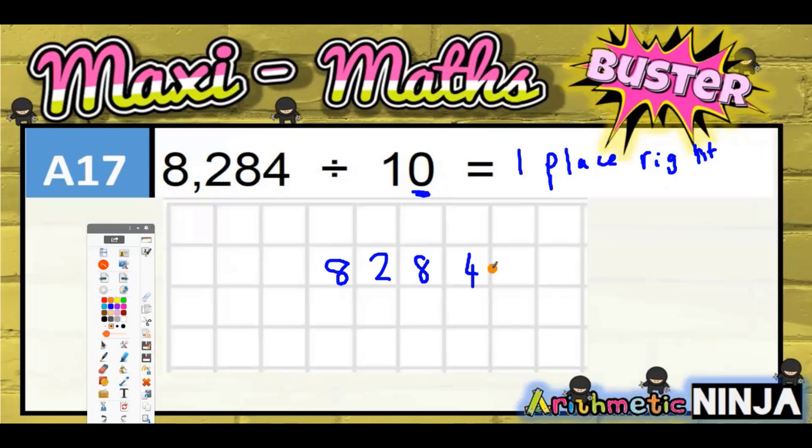Because the decimal point doesn't move, it's only the digits that move. So if you put your decimal point in, and then the line underneath, put the decimal point in so that it doesn't move, so it stays where it is.